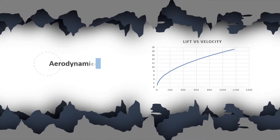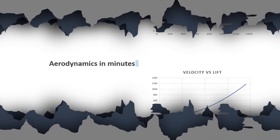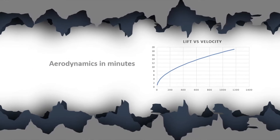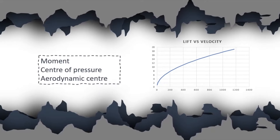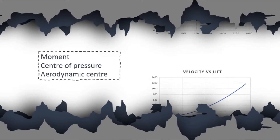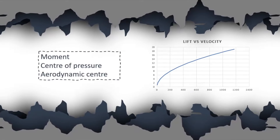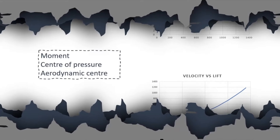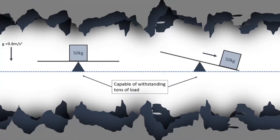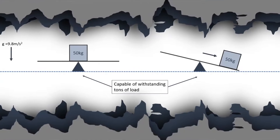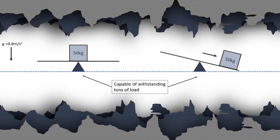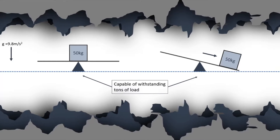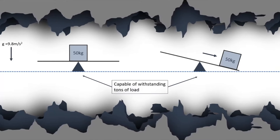Welcome to Aerodynamics in Minutes. Today we are going to understand what is moment, what is center of pressure, and what is an aerodynamic center. In the two diagrams, the pivot base is a spin joint.